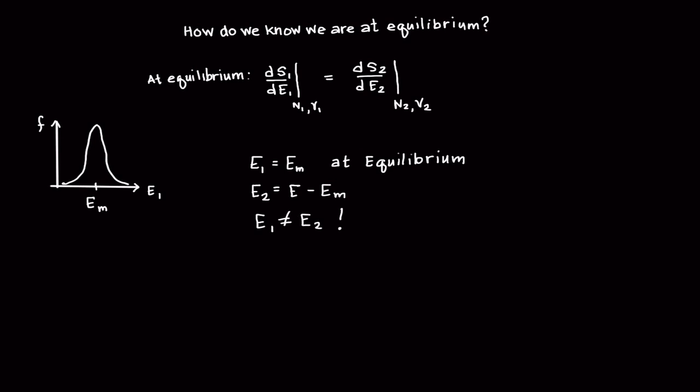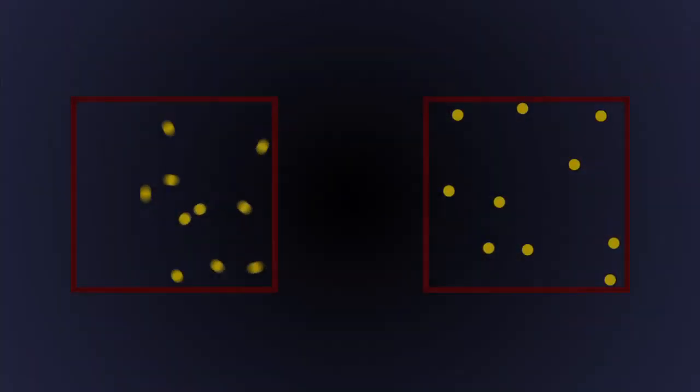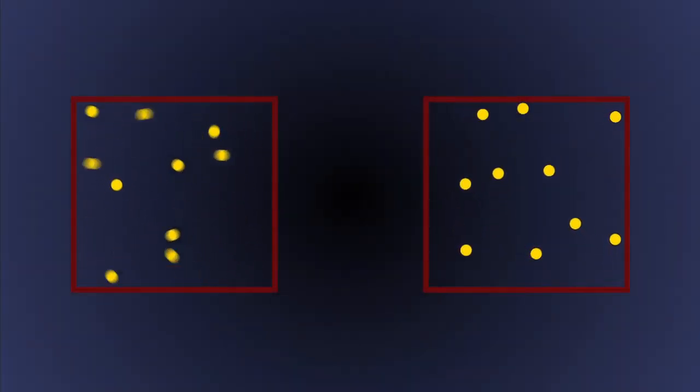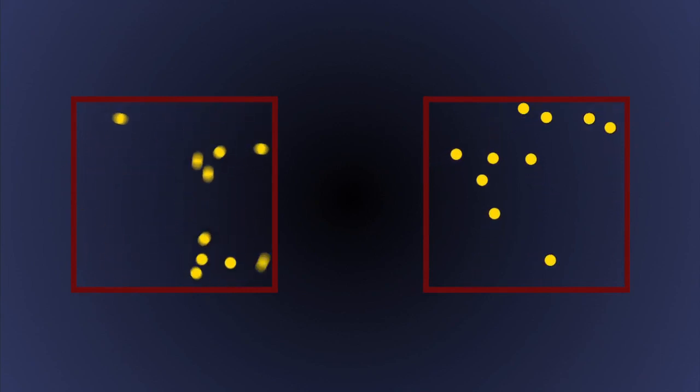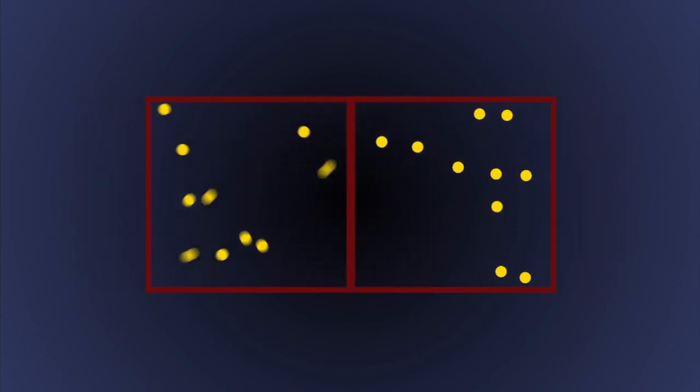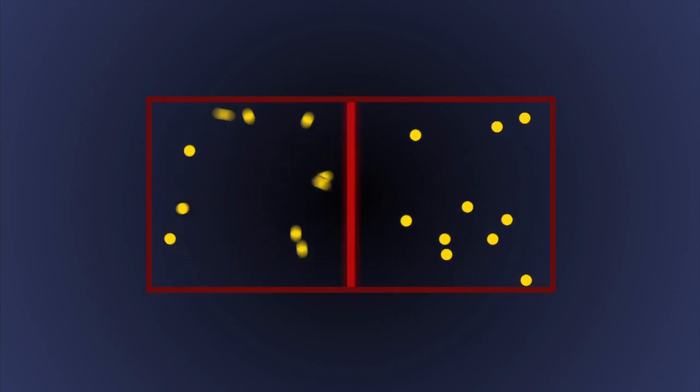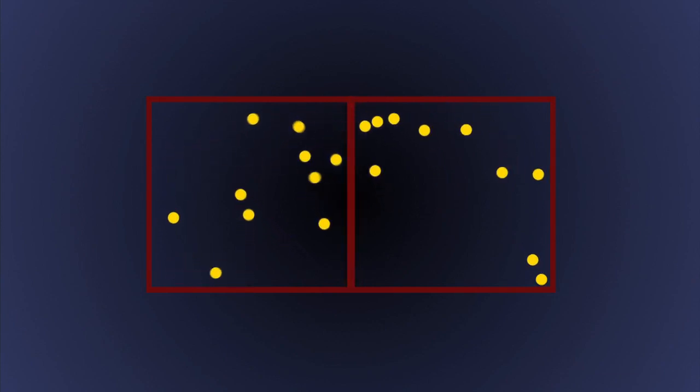This suggests that we should define the derivative of entropy with respect to energy to be a new system variable. But what would this variable represent physically? To figure out what it should be, think about our composite system. The volume of each box is constant, as is the number of particles in each box. The wall between the two boxes allows energy to transfer. Over time, what parameter will eventually be the same for both boxes?